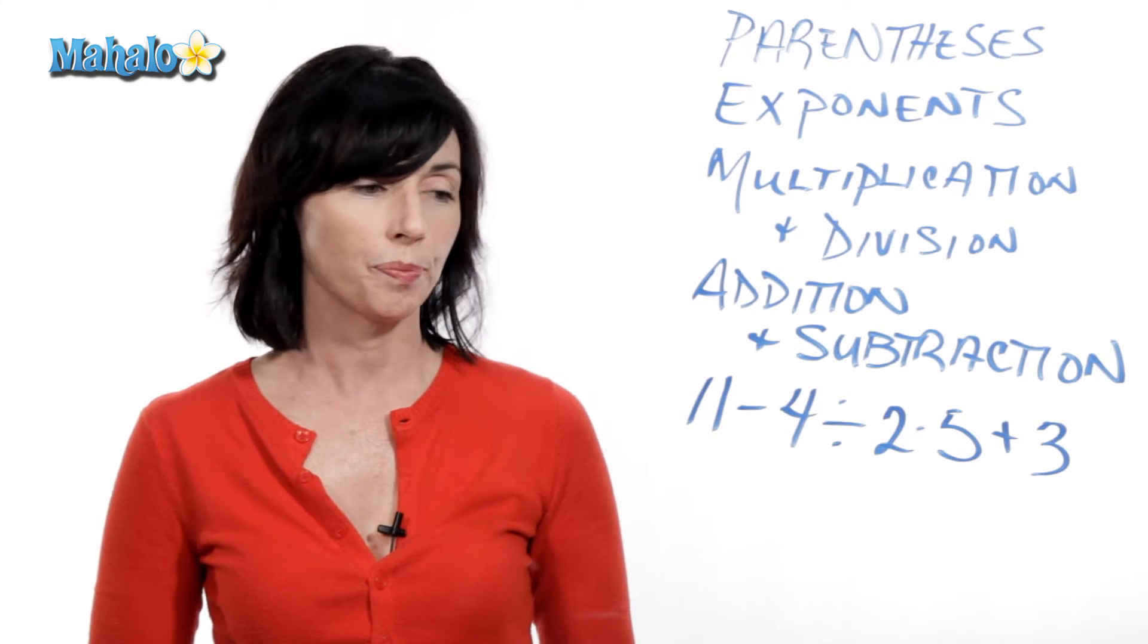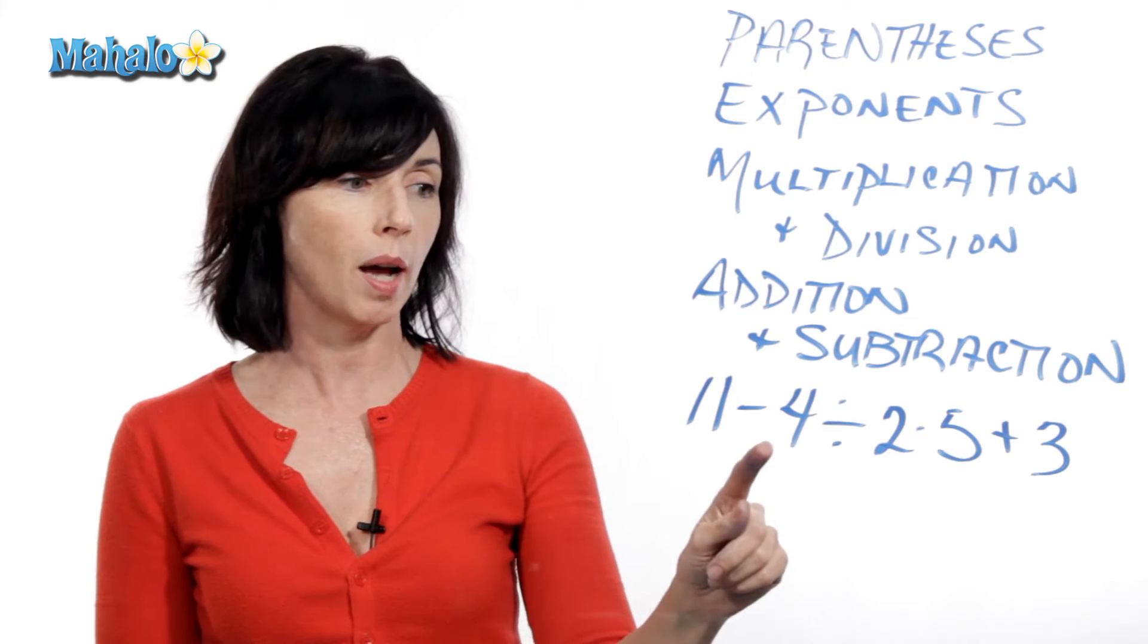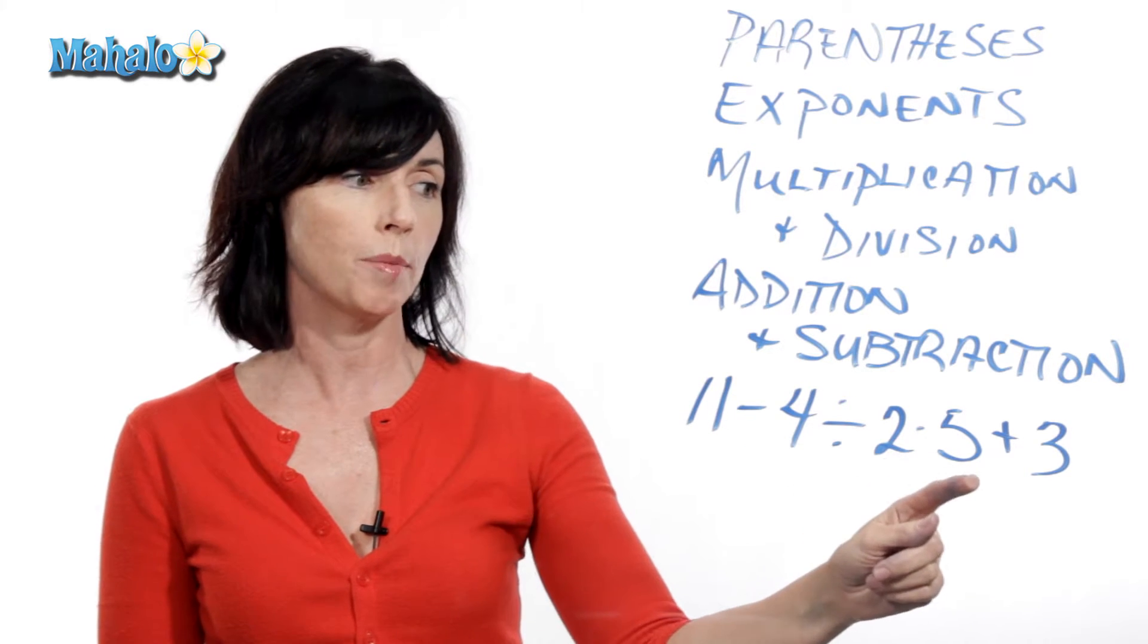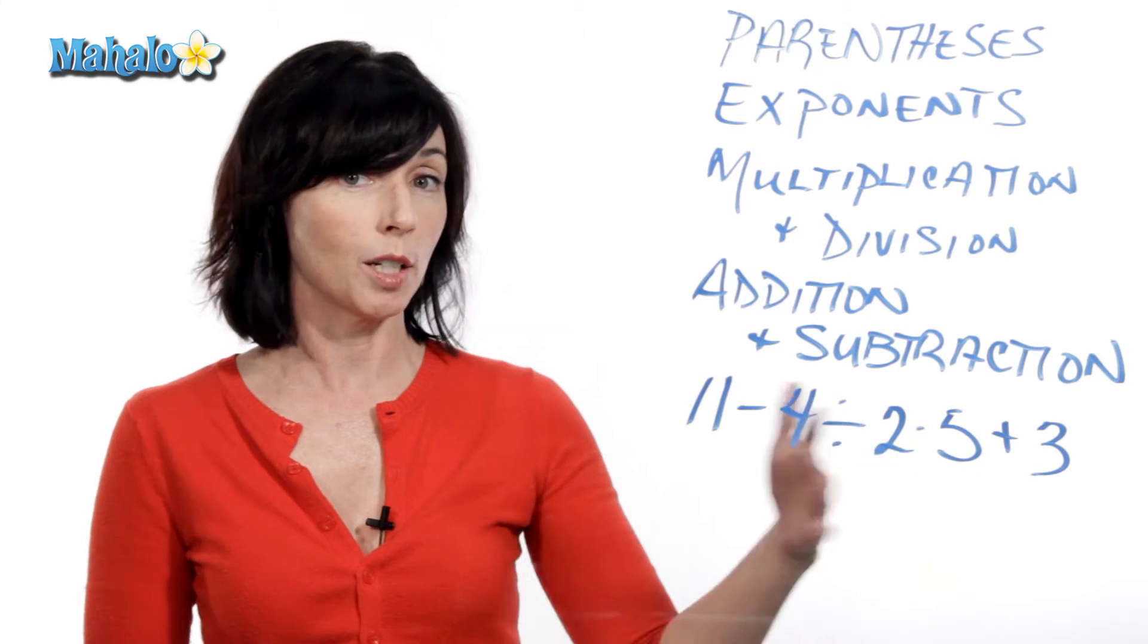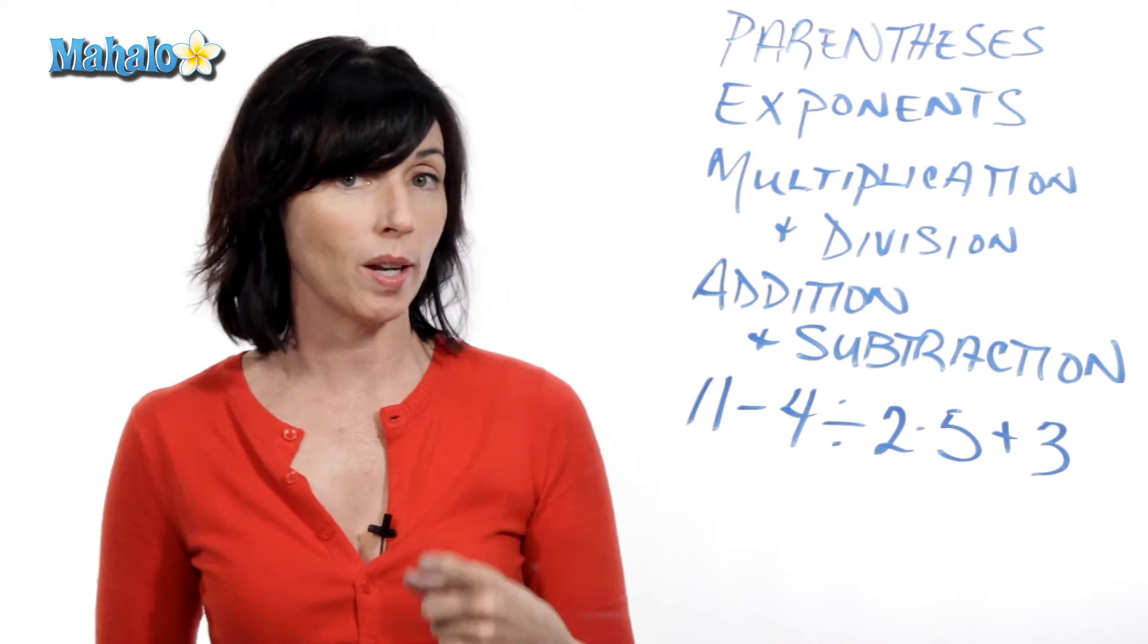So let's take a look at an example. Let's say we have 11 minus 4 divided by 2 times 5 plus 3. Now, if you don't use order of operations, you might get a completely different answer here. That's why it's so important.